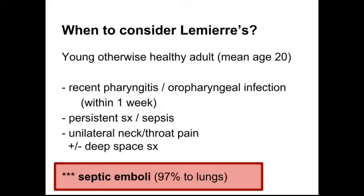So when do you need to think about Lemierre's? You have a young, otherwise healthy adult — mean age is actually around 20 — with some kind of recent pharyngitis or oropharyngeal or dental infection, usually within the last week, and then having persistent symptoms or possibly even sepsis. Think about it any time you have a patient with unilateral neck pain or throat pain, and any time you're thinking of a deep space infection of the throat — throw Lemierre's on your list and think about how you're going to rule it out.